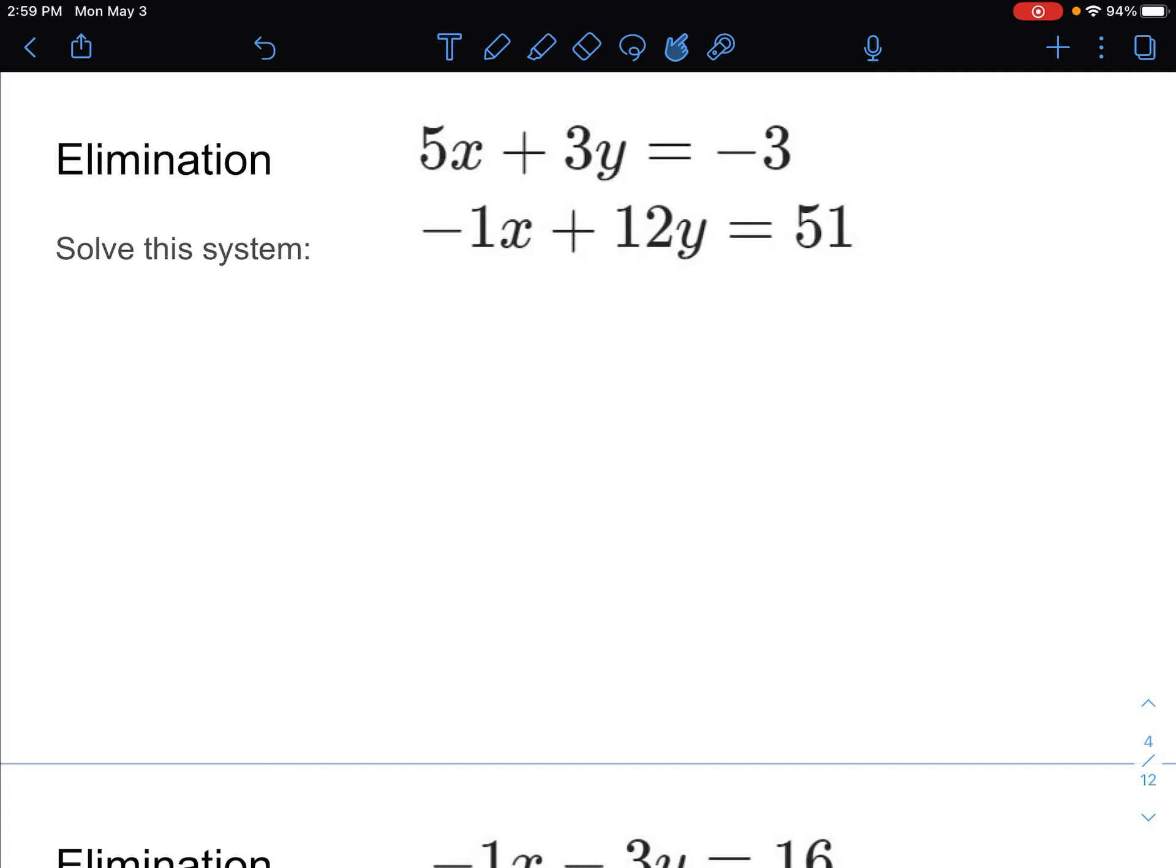So for elimination, it helps to have things lined up, meaning the x's are above the x's, the y's are above the y's, the equal sign is above the equal sign, and the numbers on the right are lined up as well.